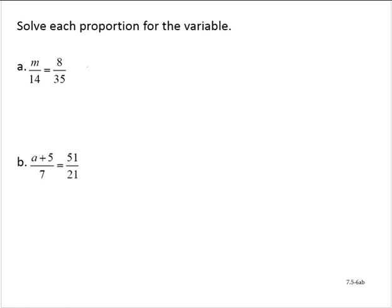Using cross products, we get m times 35 is equal to 14 times 8, or 35m is equal to 112.